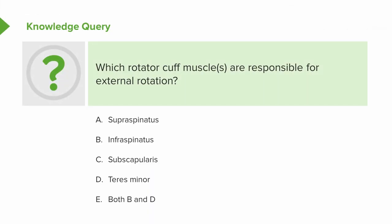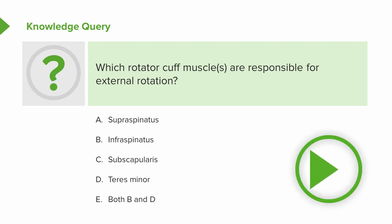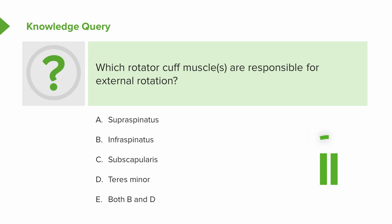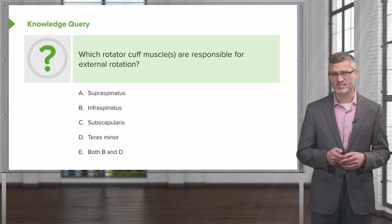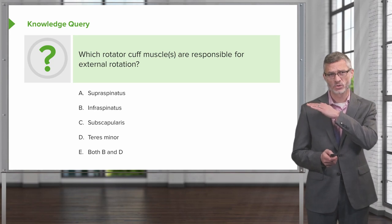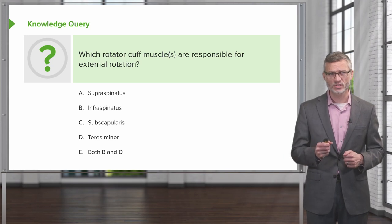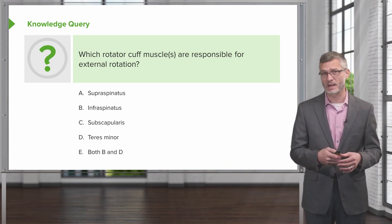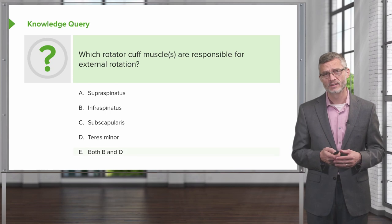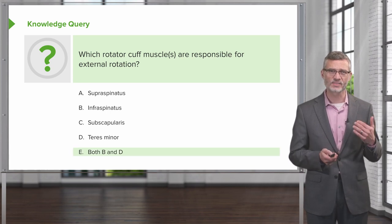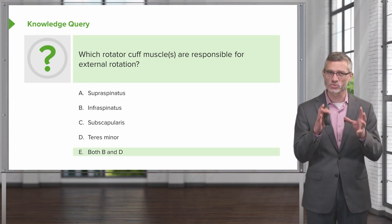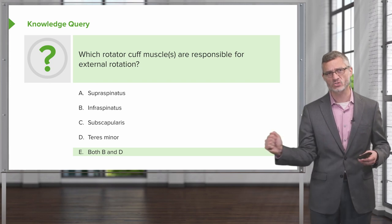Quick review question: which rotator cuff muscles are responsible for external rotation? The supraspinatus lies on top of the humeral head, so that's going to lift your shoulder up — abduction. The subscapularis is your primary internal rotator. So it's the infraspinatus and the teres minor which have this dual function of performing external rotation.